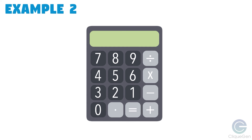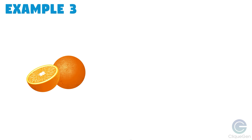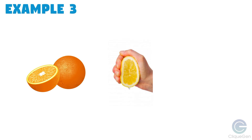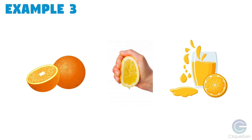IPO cycle of a calculator: 4 and 2 is the input, then the plus sign is the process, and the output is 6. Another example: orange is the input, squeezing is the process, and the output is the orange juice. If you require orange juice, you need to process the input — the orange — to get it.